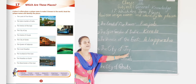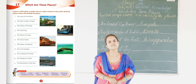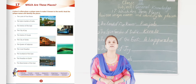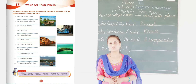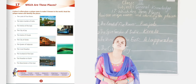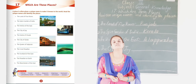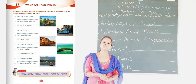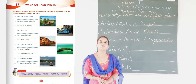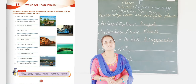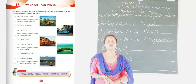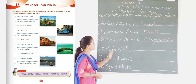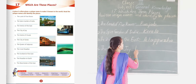Now the next one is the City of Joy. Which city is called the City of Joy? It is Kolkata. The City of Joy is Kolkata.